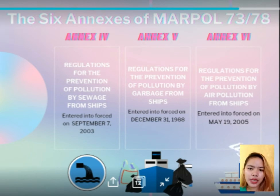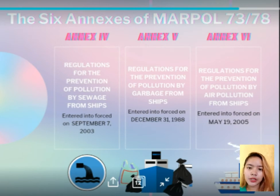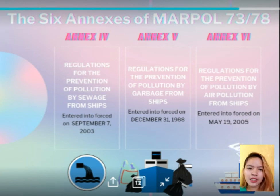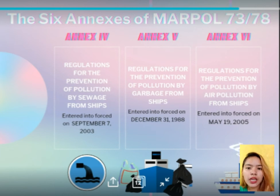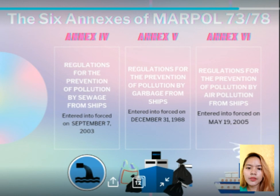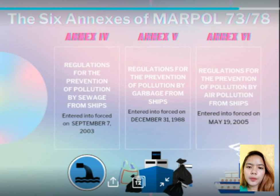Annex 5 covers the prevention of pollution by garbage from ships, entered into force on December 31, 1988. It deals with different types of garbage and specifies the distances from land and manner in which they may be disposed of. The most important measure of Annex 5 is the complete ban imposed on the disposal into the sea of all forms of plastics.